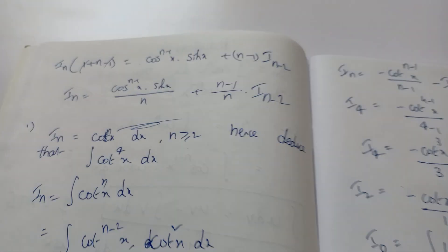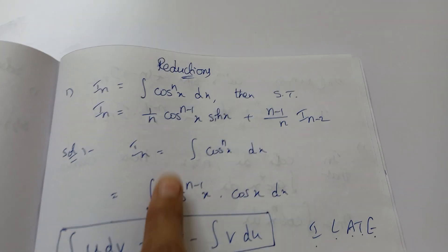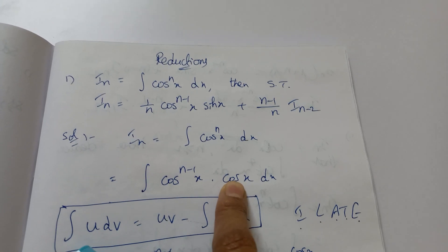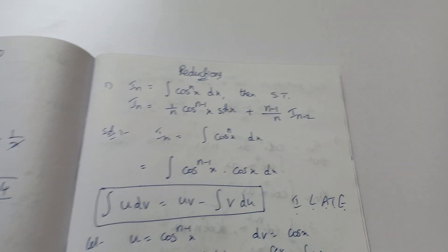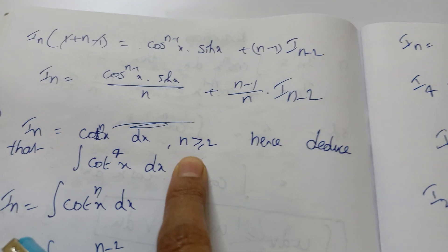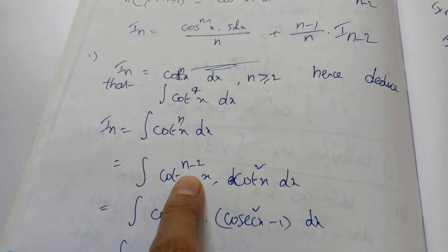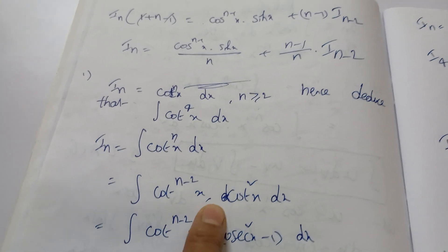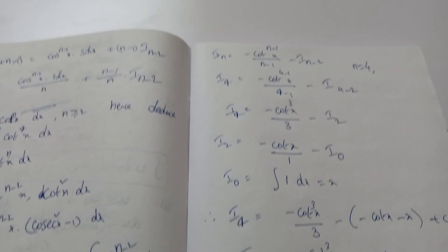So I_4 = −cot³x/3 + cot x + x + C. That's the completed answer. Reduction problems for all six trig functions are compulsory — one question will appear in the exam. I've explained cos and cot here. For cot, remember to split as cot^(n−2) x · cot²x when n ≥ 2. We will meet in the next video. Thank you, all the best.